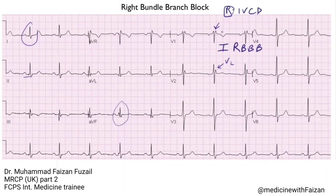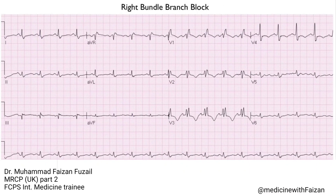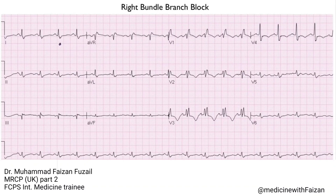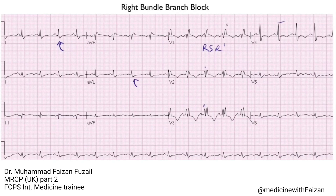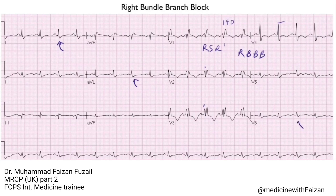The next example is a classic right bundle branch block pattern. Here, the heart rate is about 105 to 110 beats per minute. In the limb leads, there is a very broad S wave in leads 1 and AVL. There's also a beautiful RSR' pattern in V1, V2, and even V3. The R wave progression is normal, and the total QRS duration is about 130 to 140 milliseconds, so we would call this a right bundle branch block — it's classic, and you should never miss this.